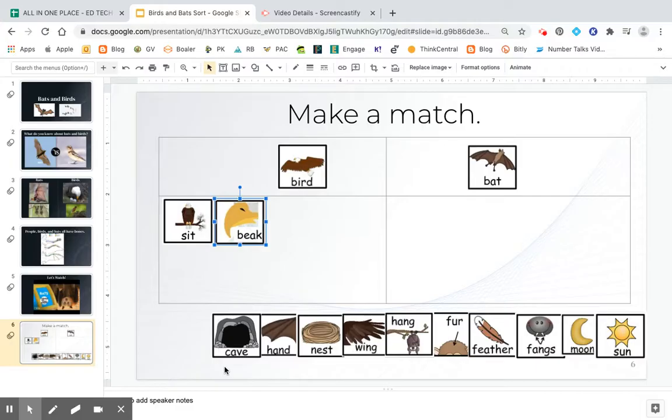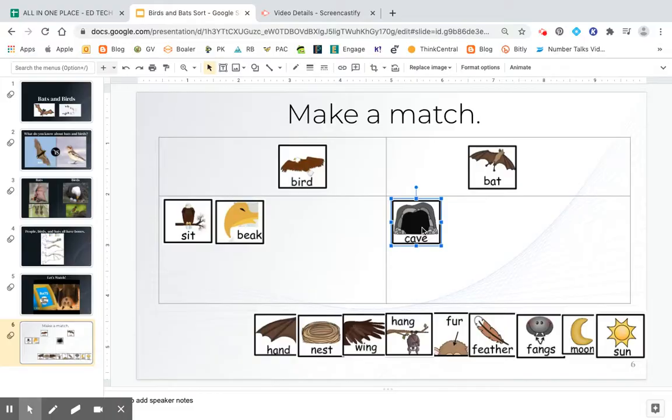Okay, now, guess what this picture says here. Let's read it together. C-A-V, cave. All right, who lives in a cave? Would it be a bird or a bat? Okay, on the count of three, everybody tell me, who lives in a cave? Is it a bird or a bat? One, two, three, tell me. I heard you. You said a bat lives in a cave. That's right. Or they sleep in a cave, I should say, right?